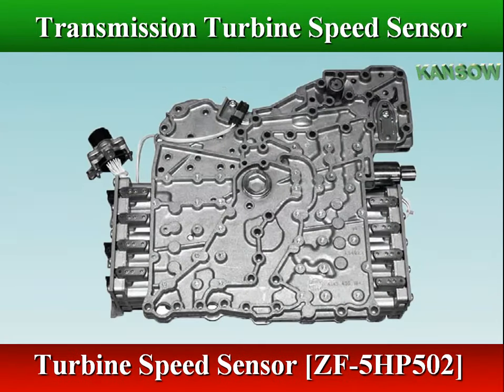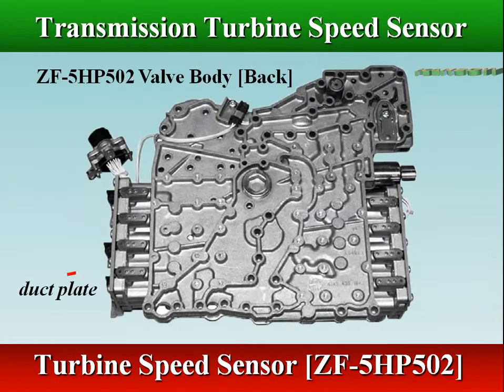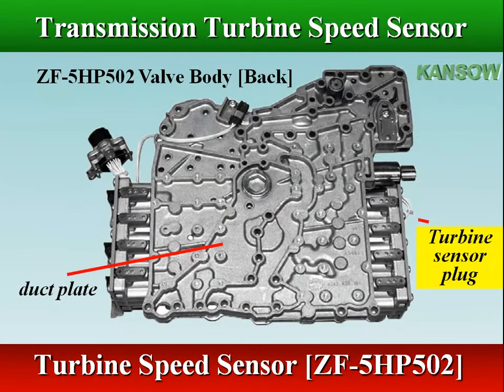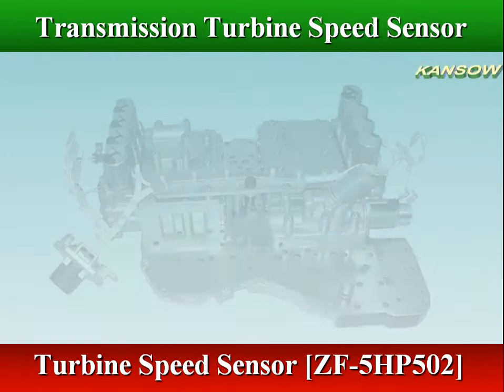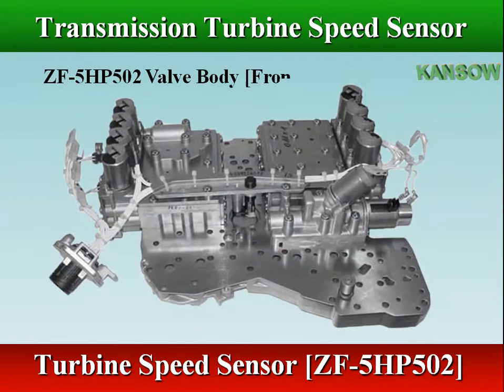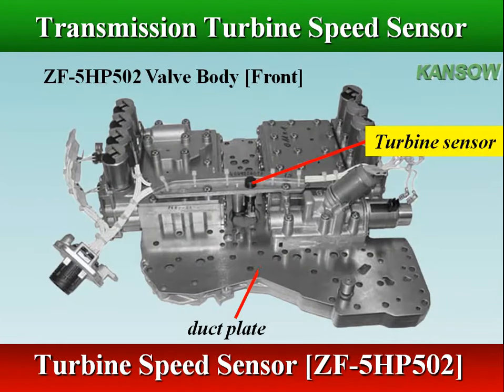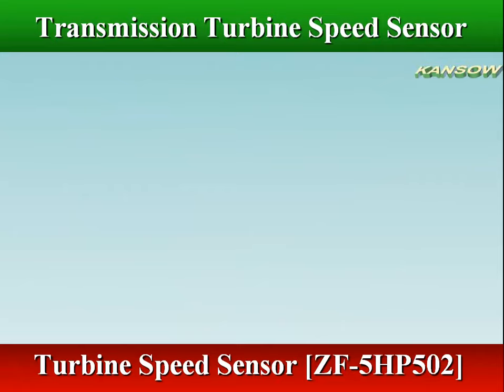In ZF ECOMAT 2 transmissions, the turbine speed sensor is internally mounted in the valve body duct plate and directed at the pulse transmitter ring attached to the clutch C housing.